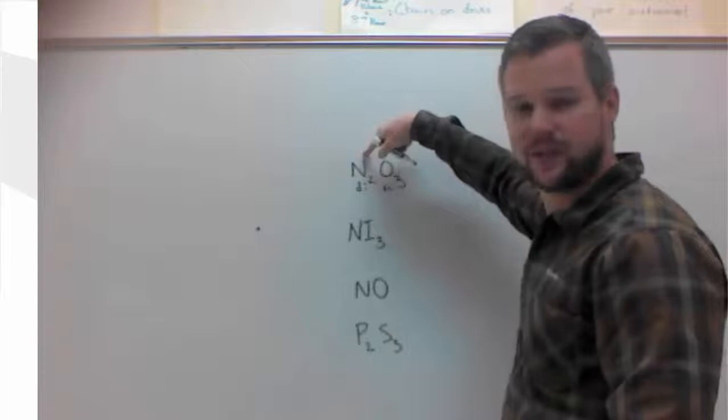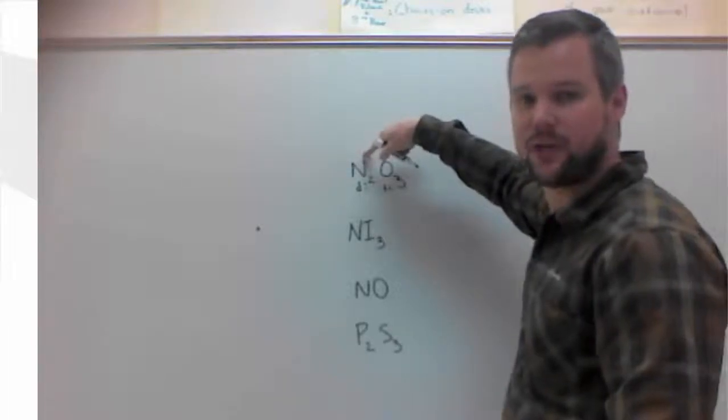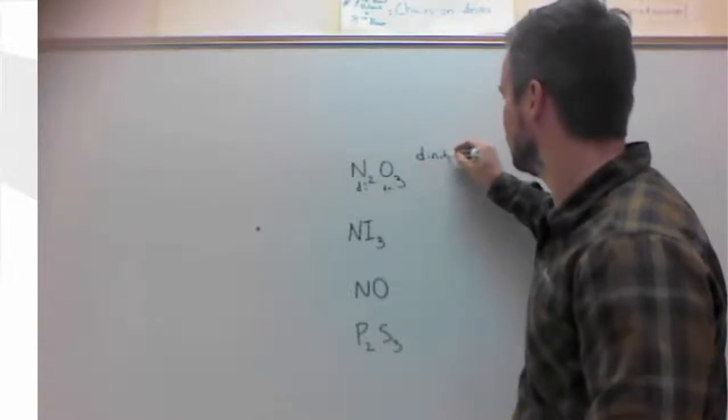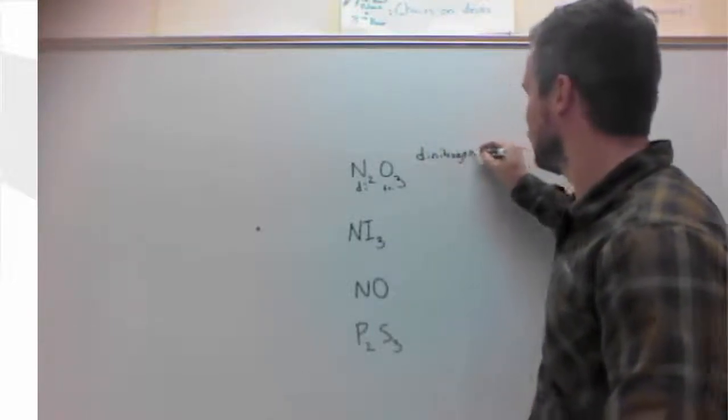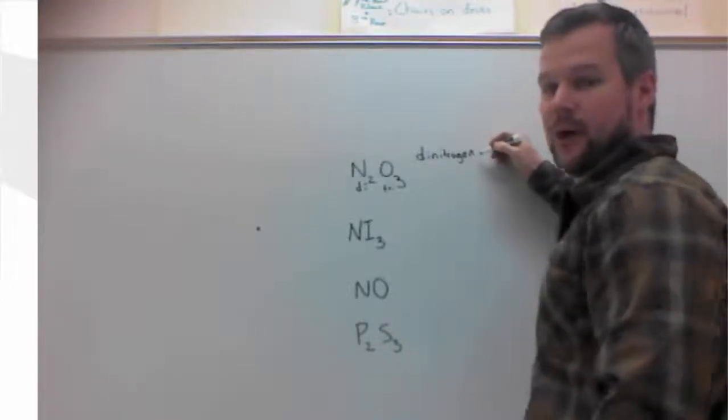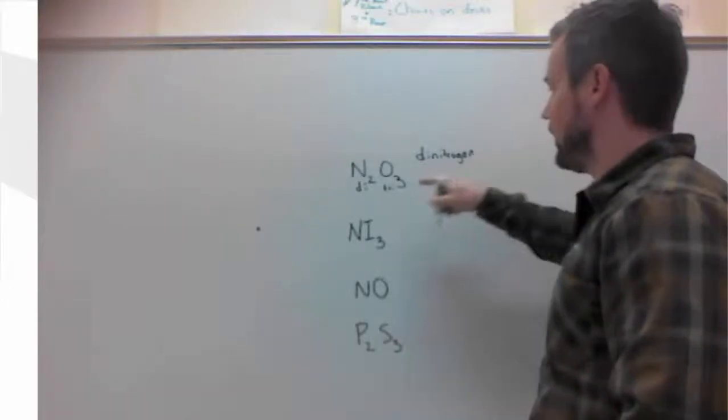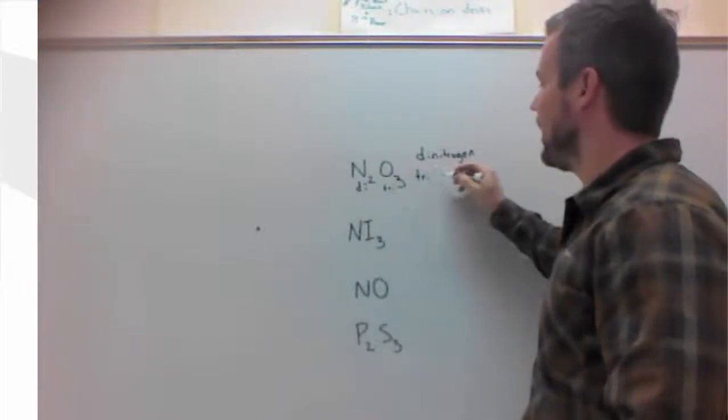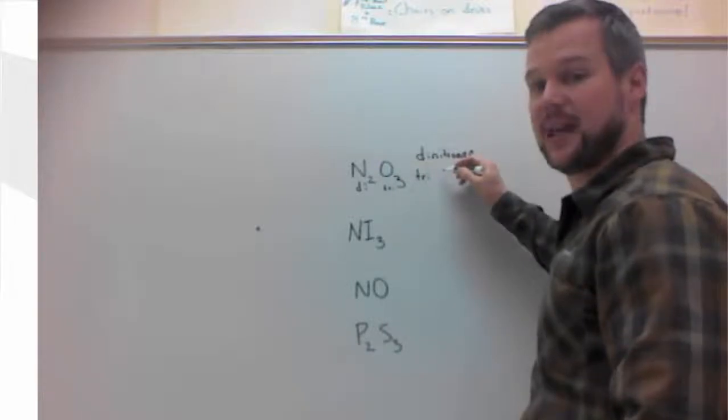The first atom gets its full name. So that's nitrogen. I'm going to put the prefix ahead of nitrogen, which will end up being dinitrogen. The second atom always has a prefix. And it gets the IDE style name. So tri-oxygen turns to oxide, trioxide.